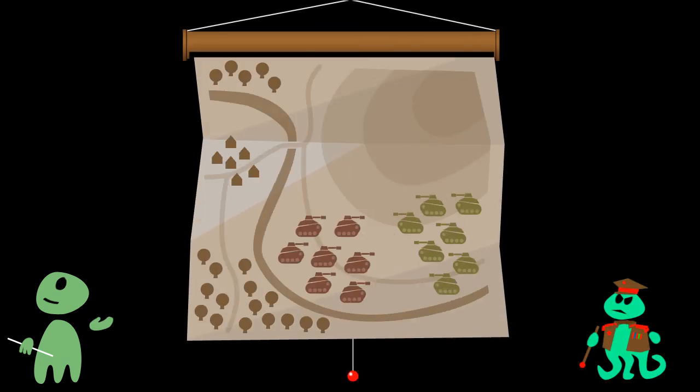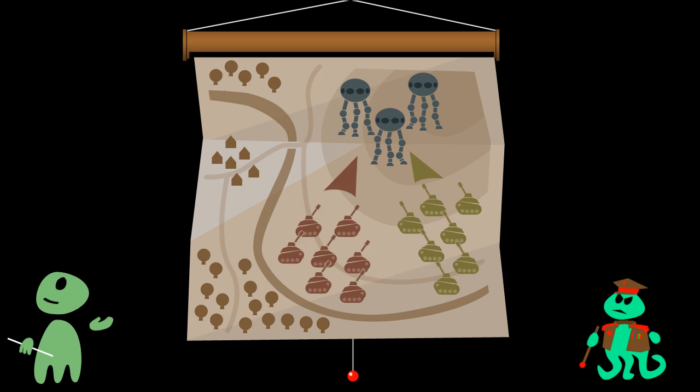Strategic advice: When you attack earth, don't count on earthlings' conflicts to play earthlings one against the other. You are not part of any earthling group, so earthlings will consider you as evil, and even sworn enemies might unite to fight against you.